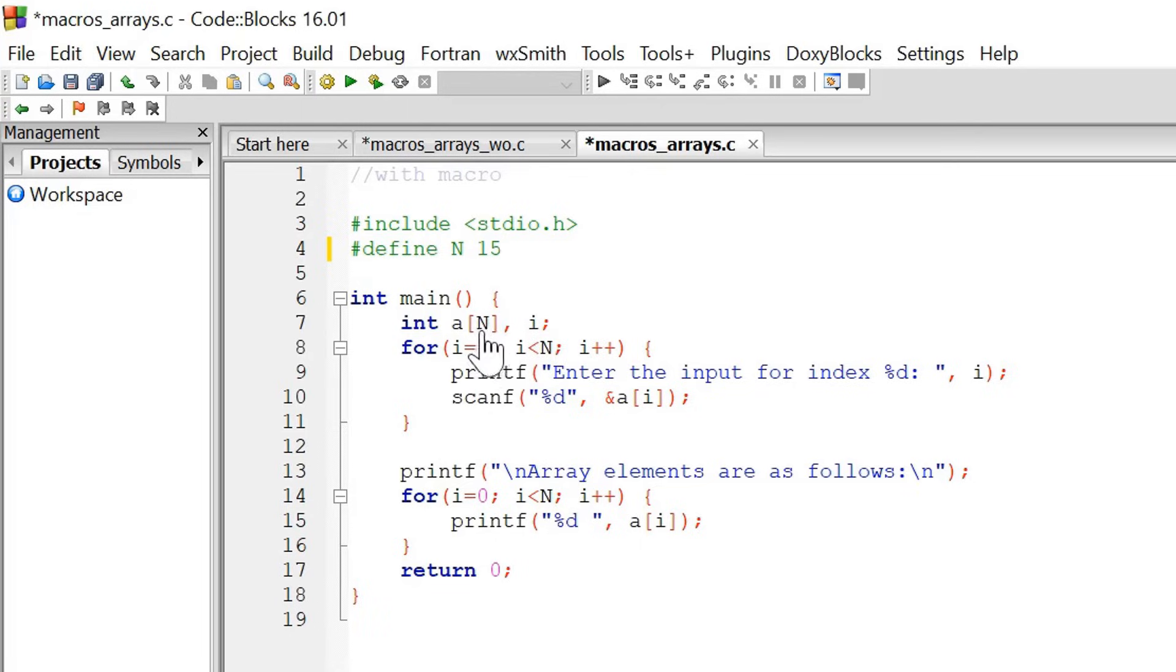There is no need to update the length over here, over here and over here. You just have to make change over here, and automatically the change will happen everywhere where you are using the macro. That is why macro is considered to be the best practice whenever you are specifying the length of an array.